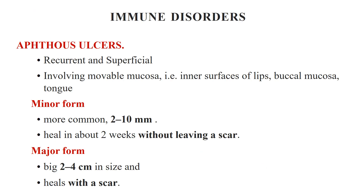Immune disorders include aphthous ulcers, which are recurrent and superficial, usually involving the movable mucosa — the inner surfaces of the lips, buccal mucosa, tongue, floor of mouth, and soft palate — while sparing the hard palate and gingiva. In the minor form, which is more common, ulcers are 2–10 mm in size, multiple, with a central necrotic area and a red halo. They heal in about 2 weeks without scarring. In the major form, ulcers become very large — around 2–4 cm — and usually heal with a scar, soon followed by another ulcer.